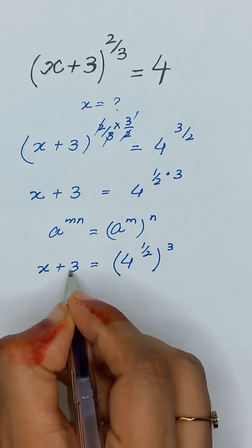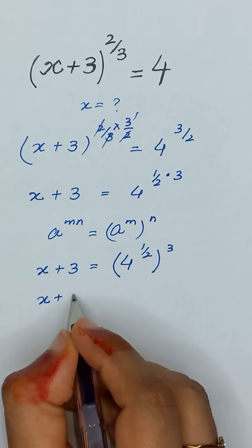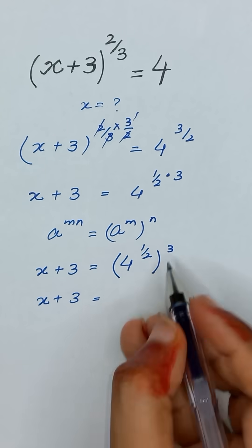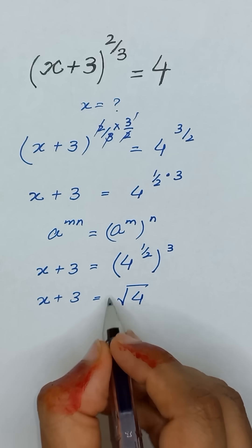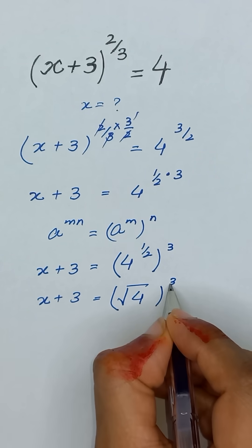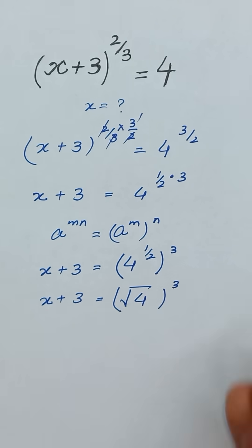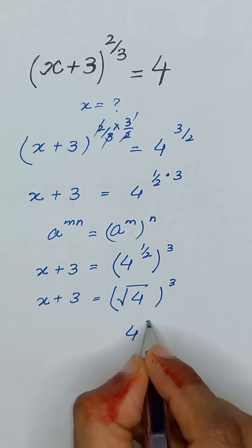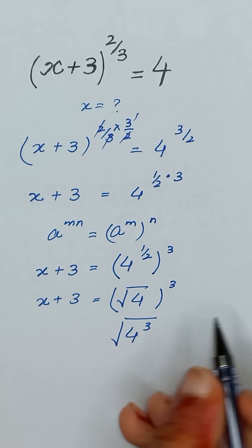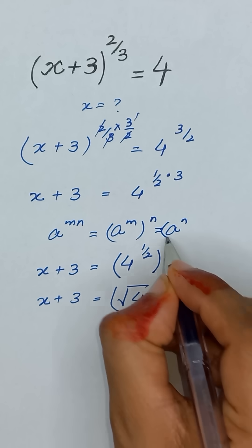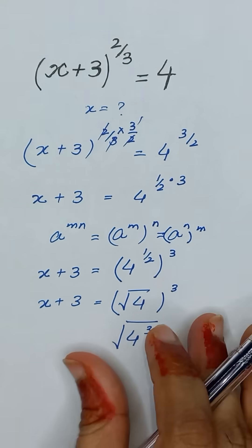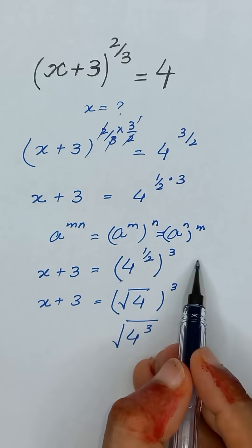And this side will remain same. So x plus 3 is equal to square root of 4 and it's power 3 which can also be written as 4 to the power 3 and it's square root. Because it can be written as a to the power n whole power m. So we can write it as 4 cube and it's power 1 divided by 2.